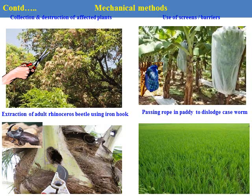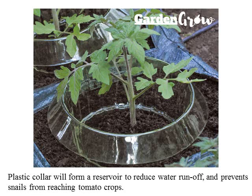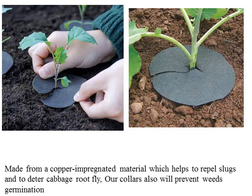Bagging the fruits helps control pests and avoid future losses. Pruning of branches. Hooking out the rhinoceros beetle with an iron hook. Using a plastic collar to reduce water runoff and prevent snails from reaching the base of plants — this is a very useful mechanical device. Copper metal implemented with a repellent helps deter the cabbage root fly. Collars can also prevent weeds and germination. These plant protection inputs, devices, and methodologies are utilized in the crop to prevent pest incidence.